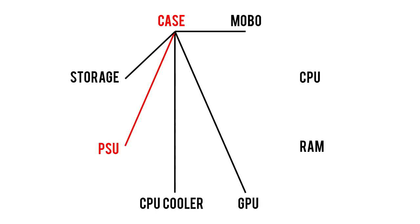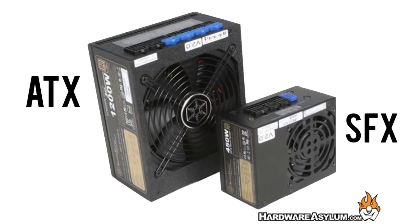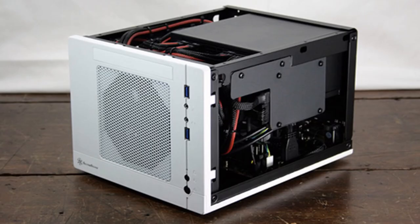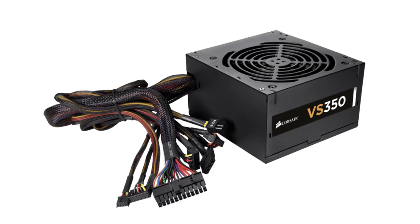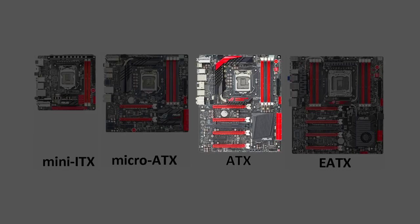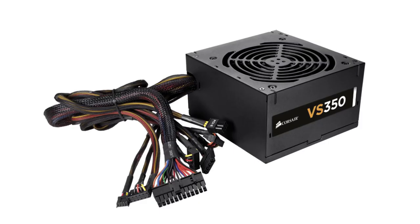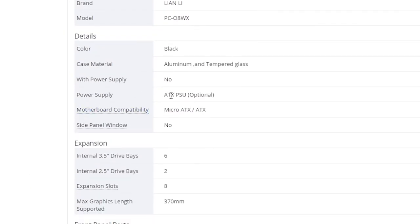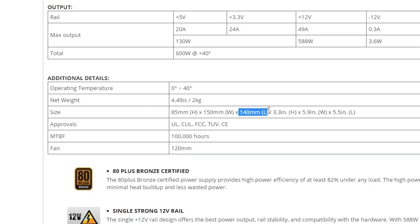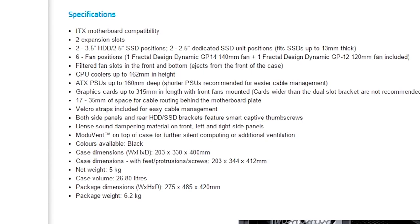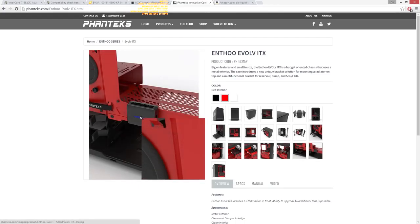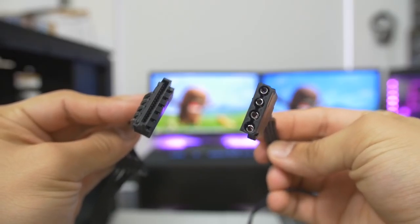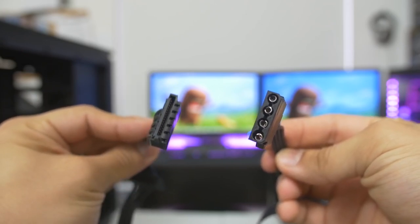To guarantee a case's compatibility with a power supply, there are three factors to consider. First, form factor — power supplies come in ATX and SFX varieties, with SFX typically only used in small form factor cases. Check both product pages to make sure the form factor of your power supply is supported by your case. Second, ensure that the length of the unit meets the requirements for your case's power supply clearance. Third, look out for any fan controllers or LEDs built into your case that require juice from your power supply — these are usually driven by a SATA or Molex connector, so make sure your power supply has the right kind and number of plugs.